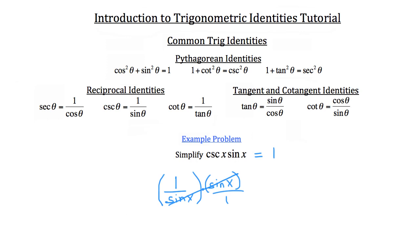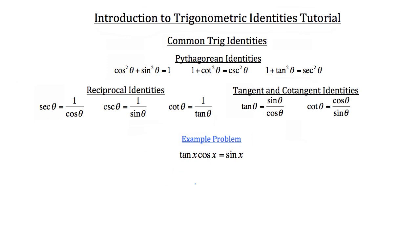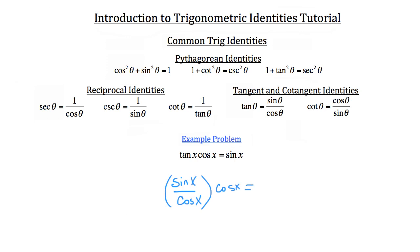Let's work with the next problem: the tangent of x times cosine of x is equal to sine x. What I want you to do is prove this identity. Let's start with what we know — the tangent of x is also equal to the sine of x over the cosine of x. So I'm going to rewrite that: tangent of x is really sine of x over the cosine of x, and then we bring down our cosine of x that we're multiplying by. Notice we haven't changed the problem at all — I've just substituted a different identity for the tangent of x.